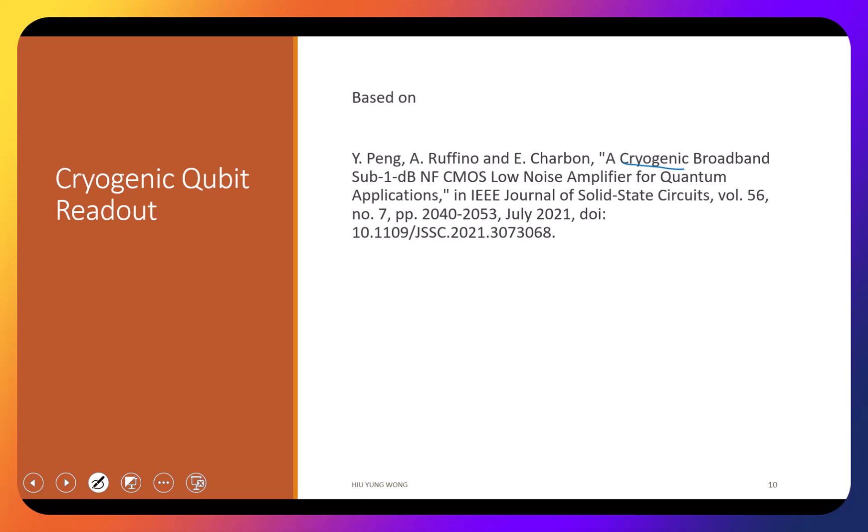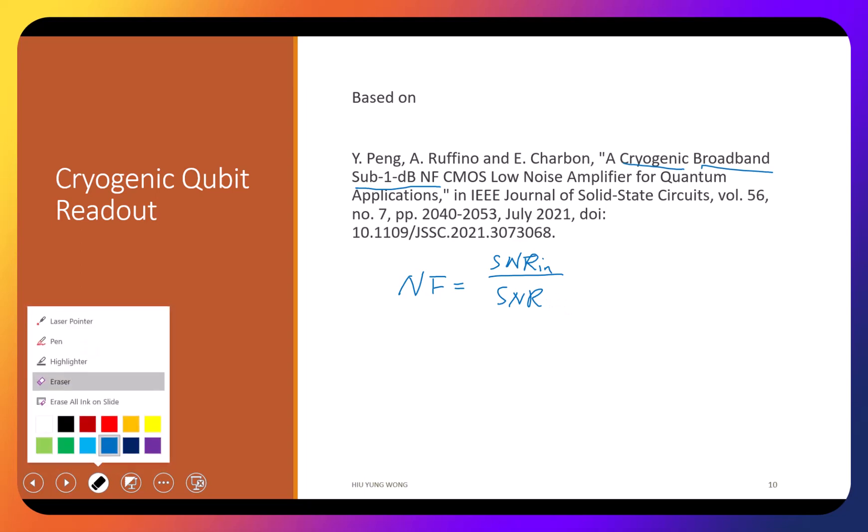Let's look at each term. What is cryogenic? You know, for low temperature. What is broadband? It means the bandwidth is large enough to handle the signal. What is sub-1dB NF noise figure? Your guy is already designing the transistor and LNA. What is noise figure? It's just signal-to-noise ratio in the input divided by signal-to-noise ratio at the output, basically telling us how much additional noise the amplifier adds to the signal.